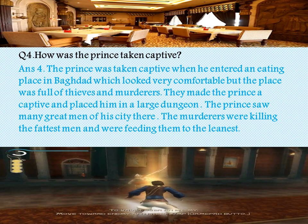Question 4: How was the prince taken captive? The answer is, the prince was taken captive when he entered an eating place in Baghdad which looked very comfortable. But the place was full of thieves and murderers. They made the prince a captive and placed him in a large dungeon. The prince saw many great men of his city there. The murderers were killing the fattest men and were feeding them to the leanest. We can see on the top the comfortable place where the prince entered and was caught, and at the bottom we can see the dungeon where he was made captive.